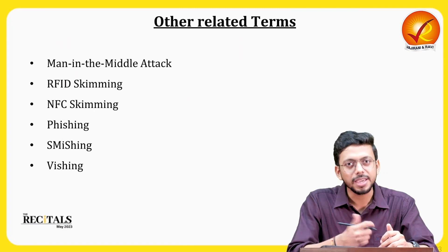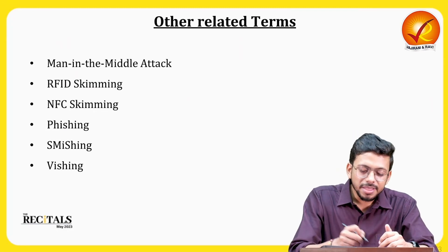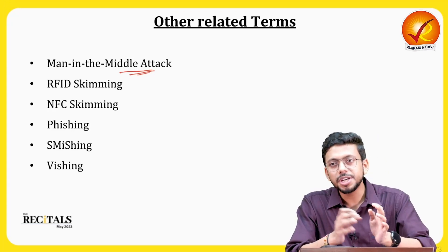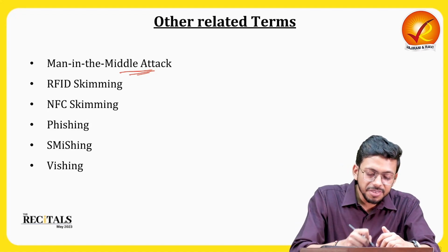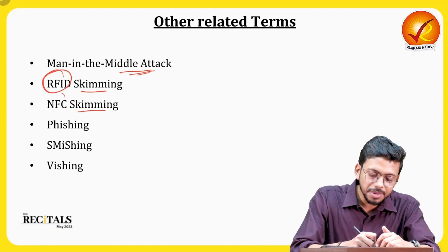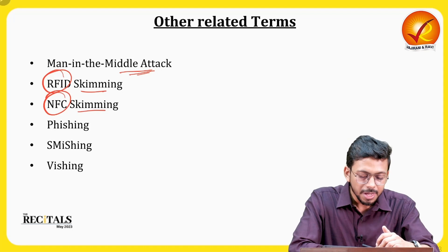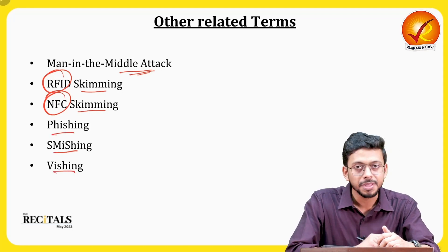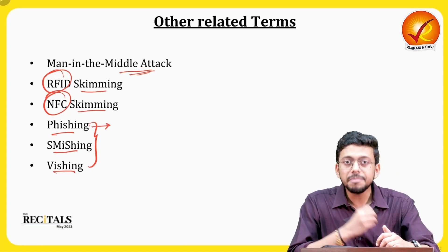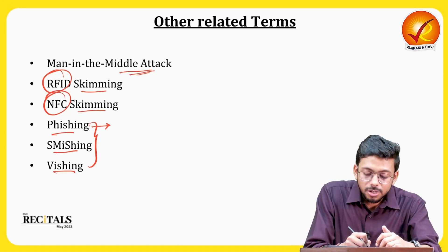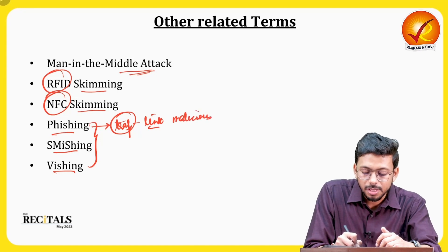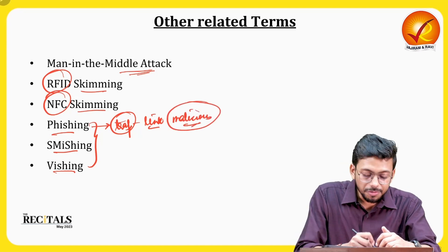There are several other terms related to hacking and cyber crime. In a man-in-the-middle attack, a system or software in between is used to transfer your data to another person's server or device. Skimming is stealing data and can involve RFID skimming or NFC skimming. Phishing, smishing, and vishing are also data-stealing techniques where the attacker tempts or traps you into clicking on malicious links.